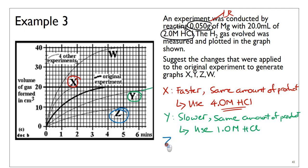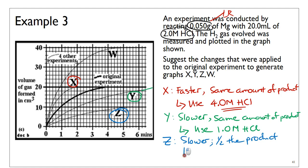Graph Z shows a slower reaction and only half the amount of product. To achieve this, reduce both the concentration of HCl and the amount of magnesium. Reducing the amount of magnesium also slows the reaction rate because there is less reactant available to collide. So for Z: reduce magnesium and use 1.0 molar HCl.